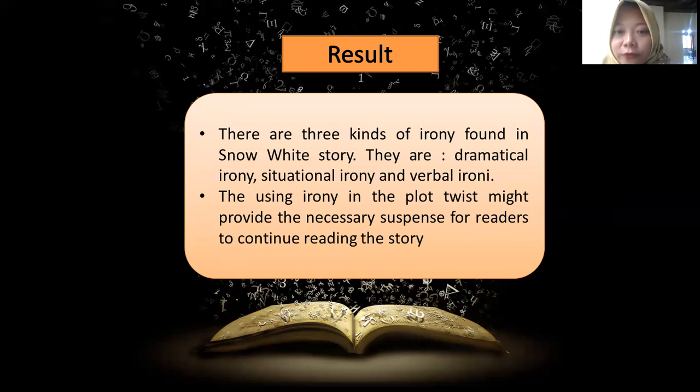The third one is verbal irony. Verbal irony happens when the mirror said that the queen is the most beautiful woman in the world, but actually the mirror knows that the most beautiful woman in the world is Snow White. The use of irony in the plot twist might provide the necessary suspense for readers to continue reading the story.